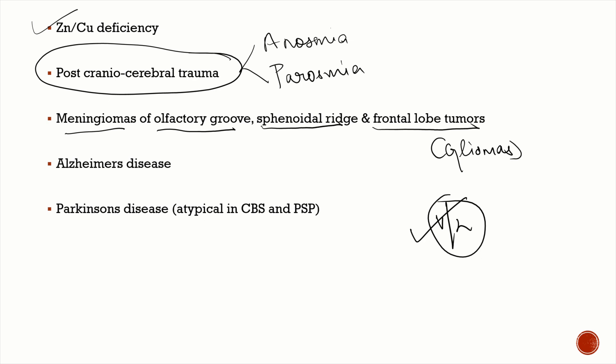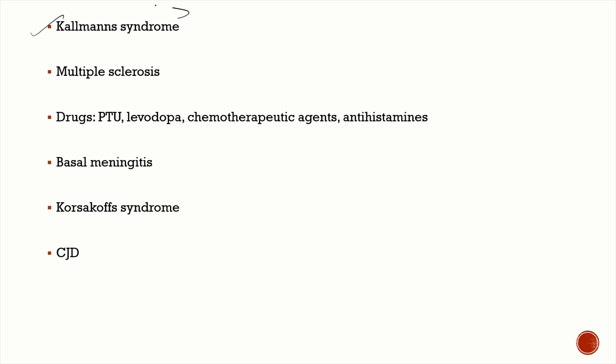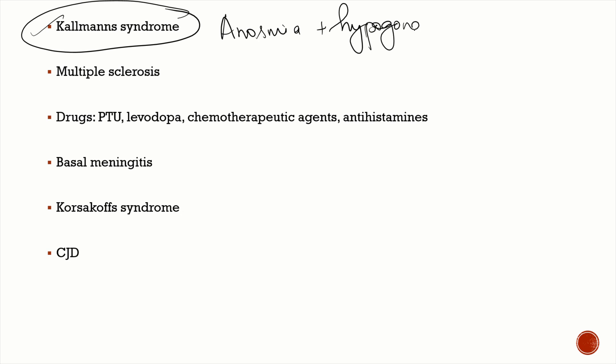This is why it's important to examine each nostril separately — certain conditions cause unilateral anosmia. Neurodegenerative disorders — Alzheimer's disease and Parkinson's disease — are very important. Anosmia is so associated with these conditions that it can be used as an early predictor. If anosmia is absent, you should doubt your diagnosis. In certain Parkinson's plus syndromes like corticobasal degeneration and progressive supranuclear palsy, anosmia is not a typical feature.